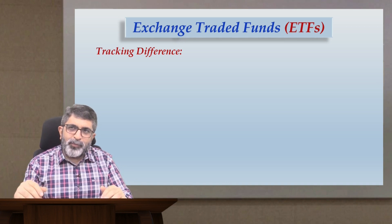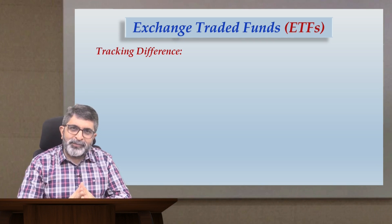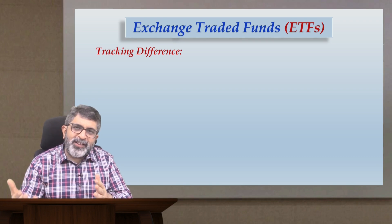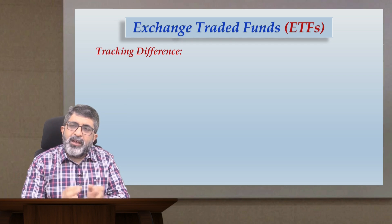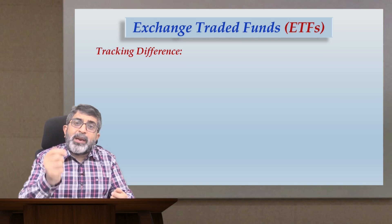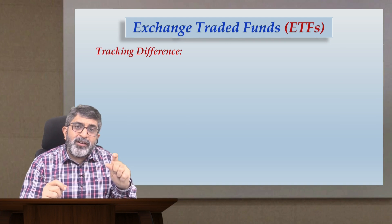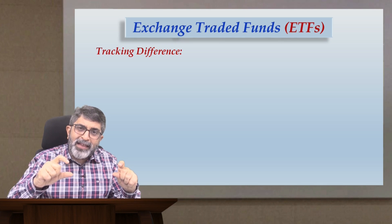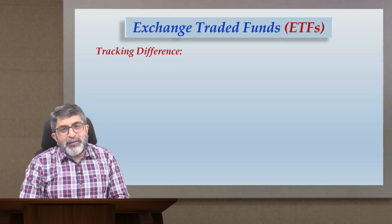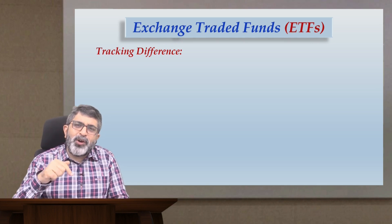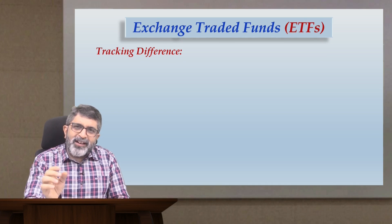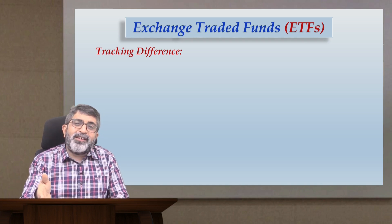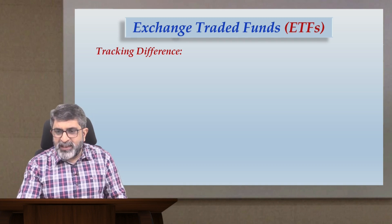This part onward it is indeed very simple — you just need to know the terminology. As we have discussed earlier, an ETF is basically trying to replicate a particular index, but in reality it may not completely be able to replicate it. Therefore the return offered by the index and the return generated by the ETF may have a difference — sometimes favorable, sometimes unfavorable from the viewpoint of the ETF investor. This difference is what we call tracking difference.